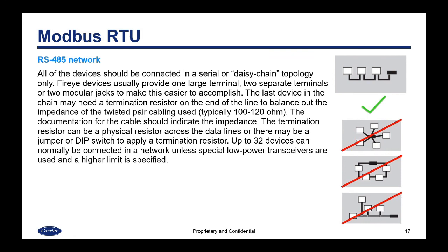Up to 32 devices can normally be connected in a network unless special low-power transceivers are used and a higher limit is specified. According to the normal RS-485 standard, the power requirement allows 32 devices to be connected. Manufacturers of RS-485 transceivers later created lower-power versions, so if you had a quarter-power transceiver, you could have four times more devices.